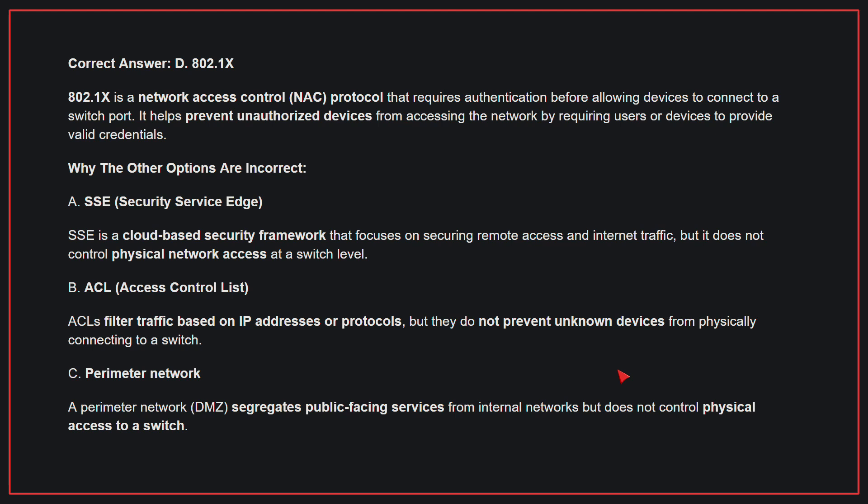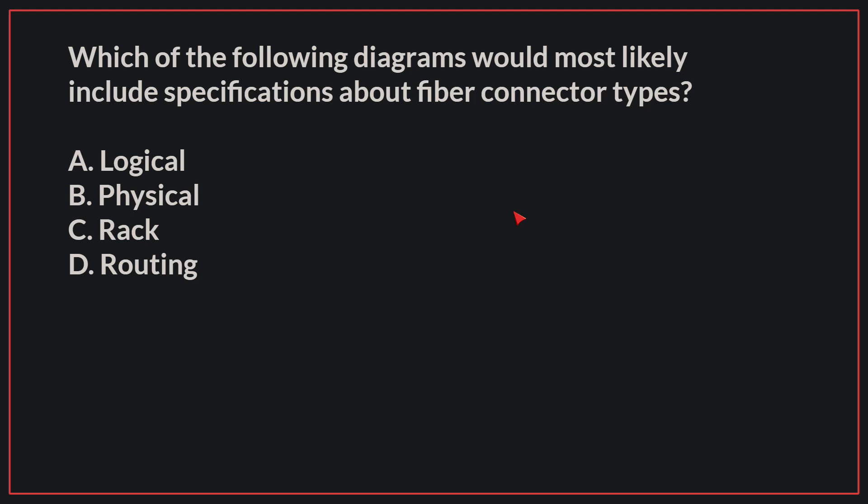Why the other options are incorrect? A, SSE: SSE is a cloud-based security framework that focuses on securing remote access and internet traffic, but it does not control physical network access at a switch level. B, ACLs: ACLs filter traffic based on IP addresses or protocols, but they do not prevent unknown devices from physically connecting to a switch. C, Perimeter network: A perimeter network segregates public-facing services from internal networks, but does not control physical access to a switch. Therefore, the correct answer is D, 802.1X.